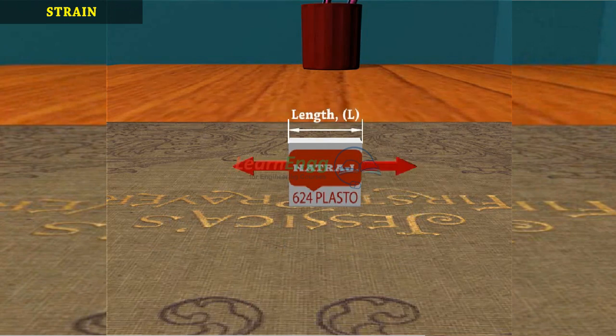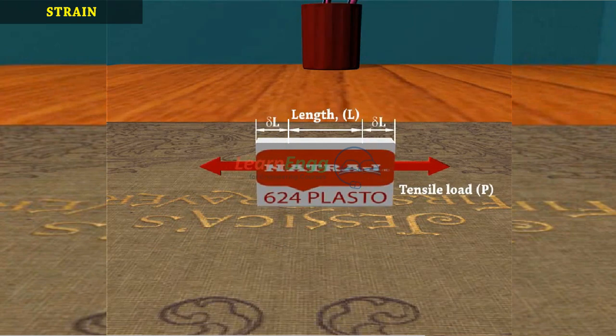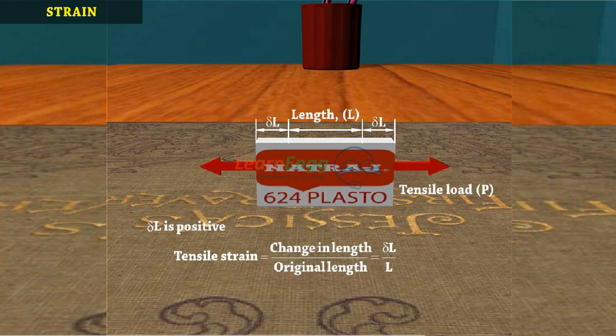The tensile load is applied on the eraser. Here the change in length is positive. Therefore, tensile strain equals change in length Δl by original length L.